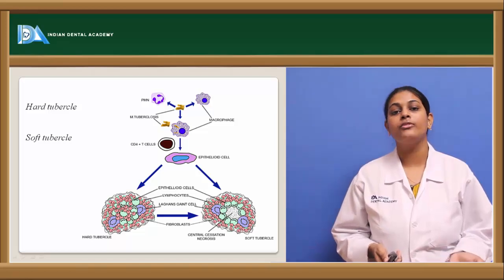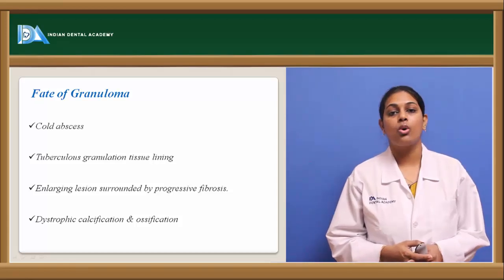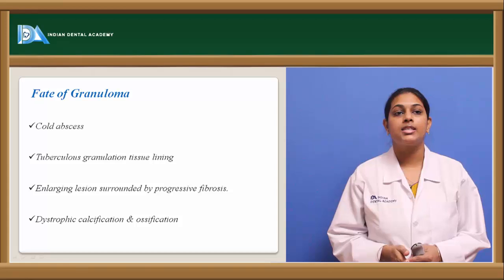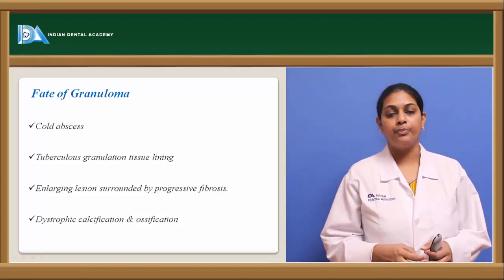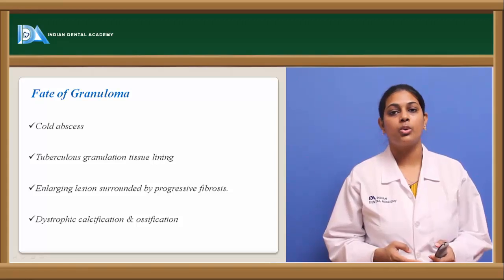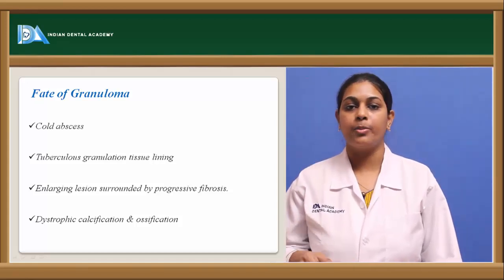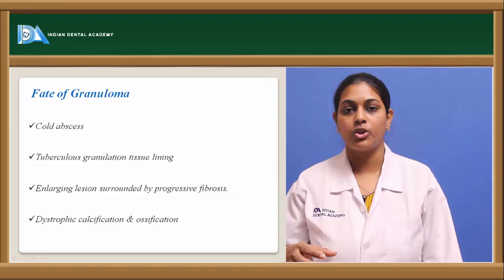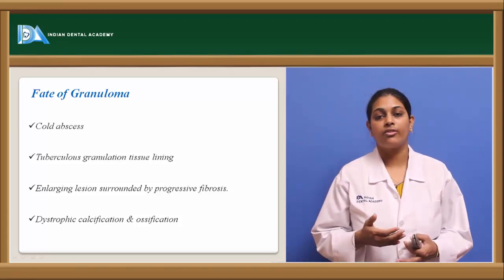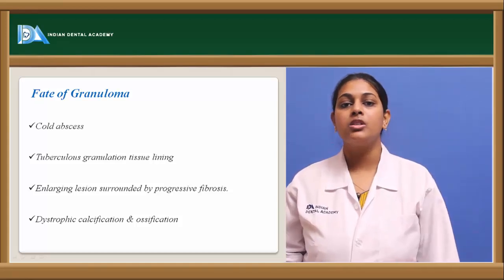Coming to the fate of tuberculosis: it may result in formation of colliquative necrosis — so called because caseation necrosis starts draining, spreading to other areas. When tissues like bone or lymph nodes are involved, the tuberculosis granuloma spreads within sinus tracts, lining these tissues. So one fate of the granuloma is lining bone, lymph nodes, and sinus tracts with tuberculosis granuloma.